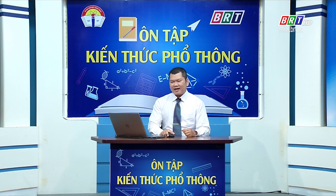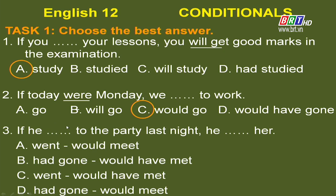Question 3 requires us to choose verbs for both the if-clause and the main clause. Since neither is given, we rely on context — specifically the time adverb 'last night,' which refers to the past. Past context means Type 3 conditional. The if-clause uses past perfect, and the main clause uses 'would have + past participle.' Therefore, the correct answer is option B.